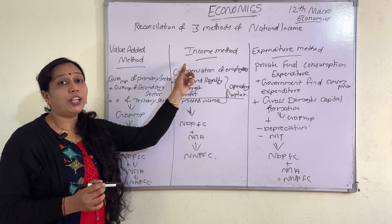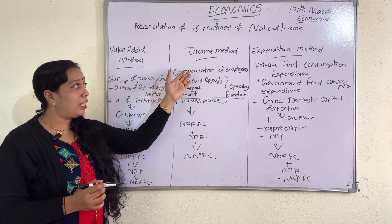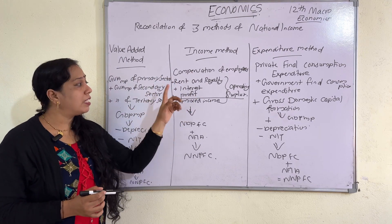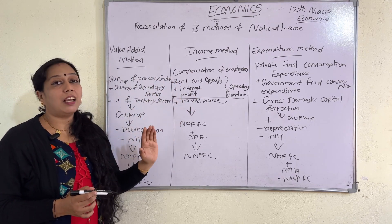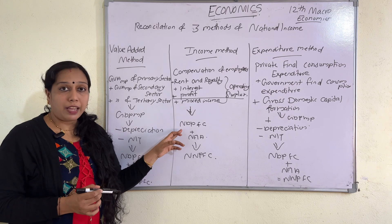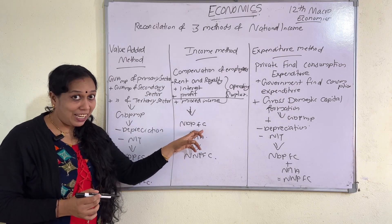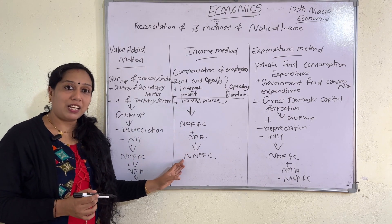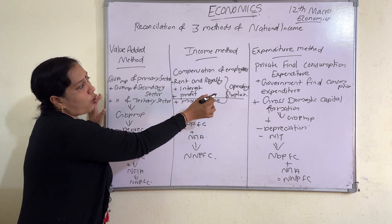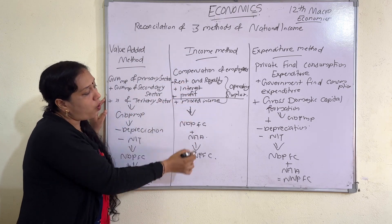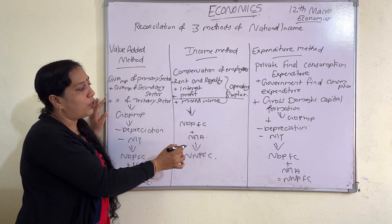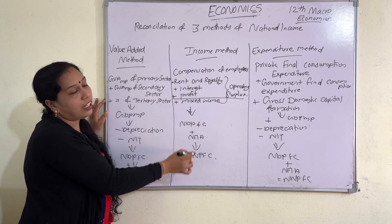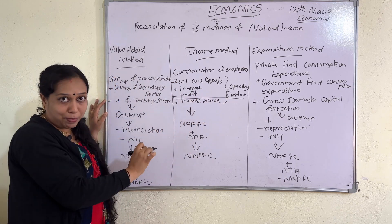So the formula to find national income through the income method is: compensation of employees plus operating surplus plus mixed income, plus NFIA — giving NNPFC. Sometimes they will ask for operating surplus, giving you all the remaining values including NNPFC, so you deduct the rest to find operating surplus.